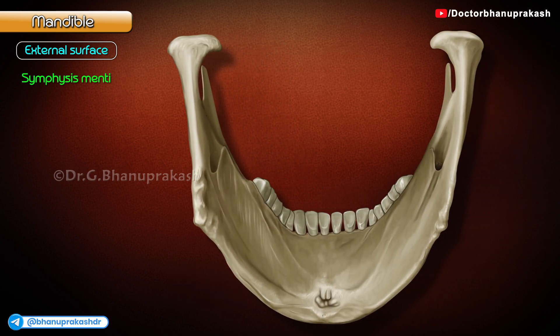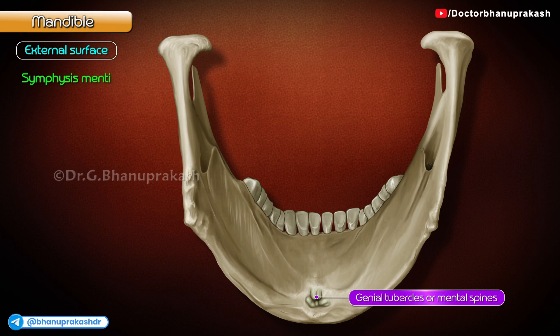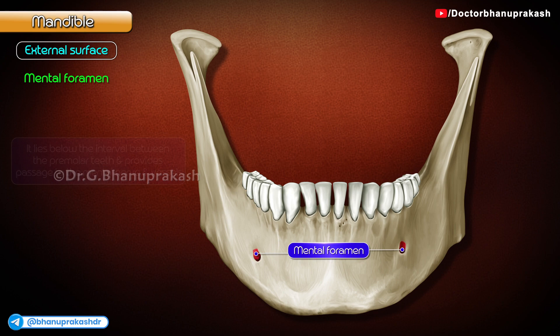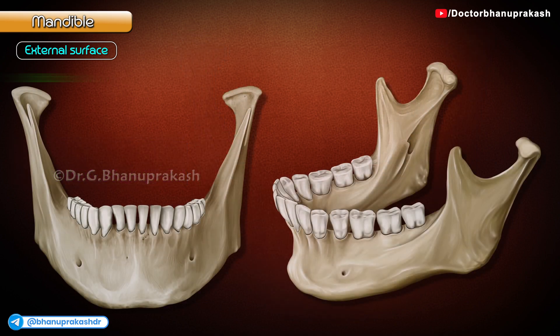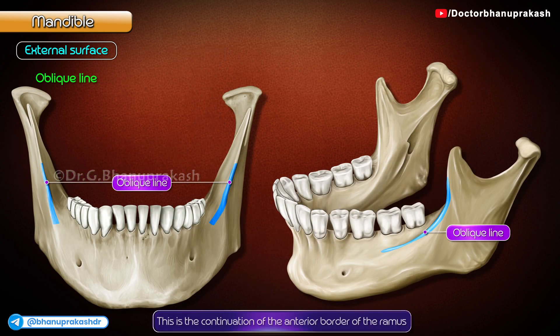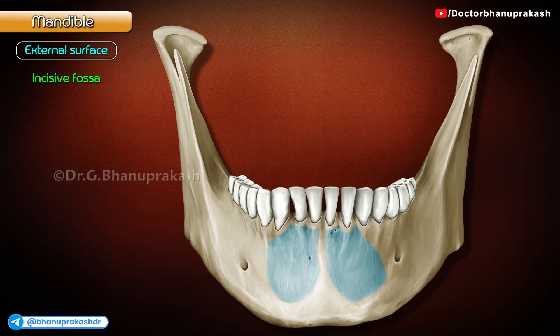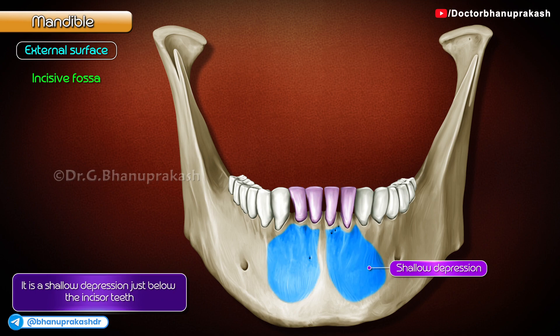The inner aspect of the symphysis menti possesses four tubercles called the genial tubercles or mental spines, arranged into two pairs: upper and lower. Mental foramen: it lies below the interval between the premolar teeth and provides passage to the mental nerve and vessels. Oblique line: this is a continuation of the anterior border of the ramus, running downwards and forwards towards the mental tubercle. Incisive fossa: it is a shallow depression just below the incisor teeth.